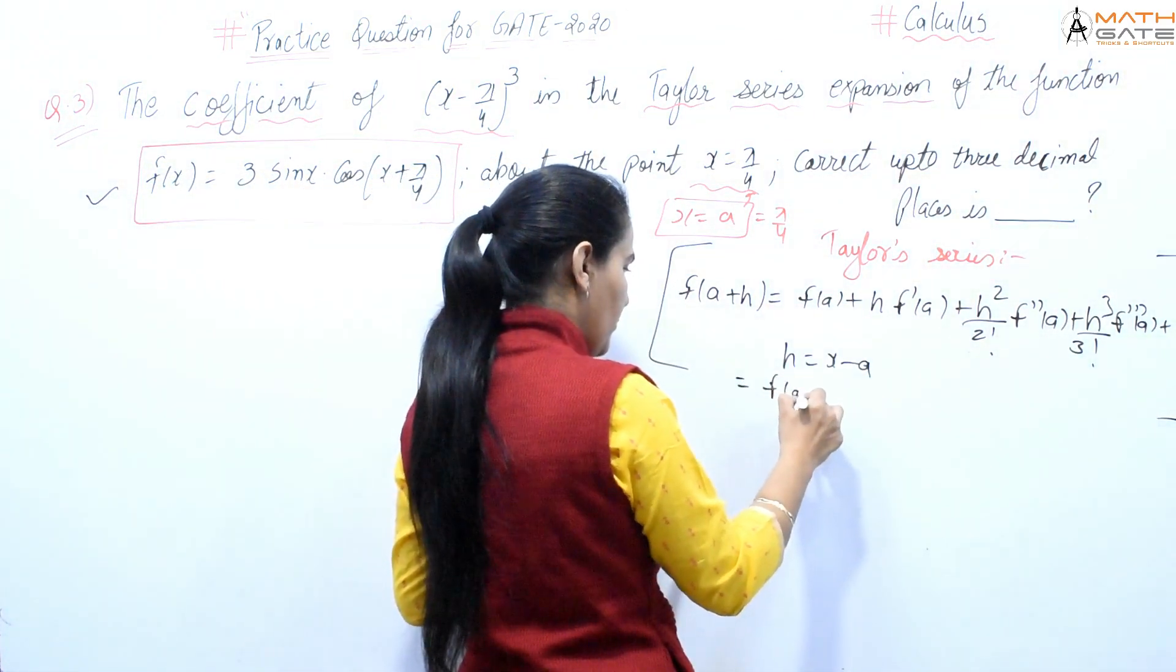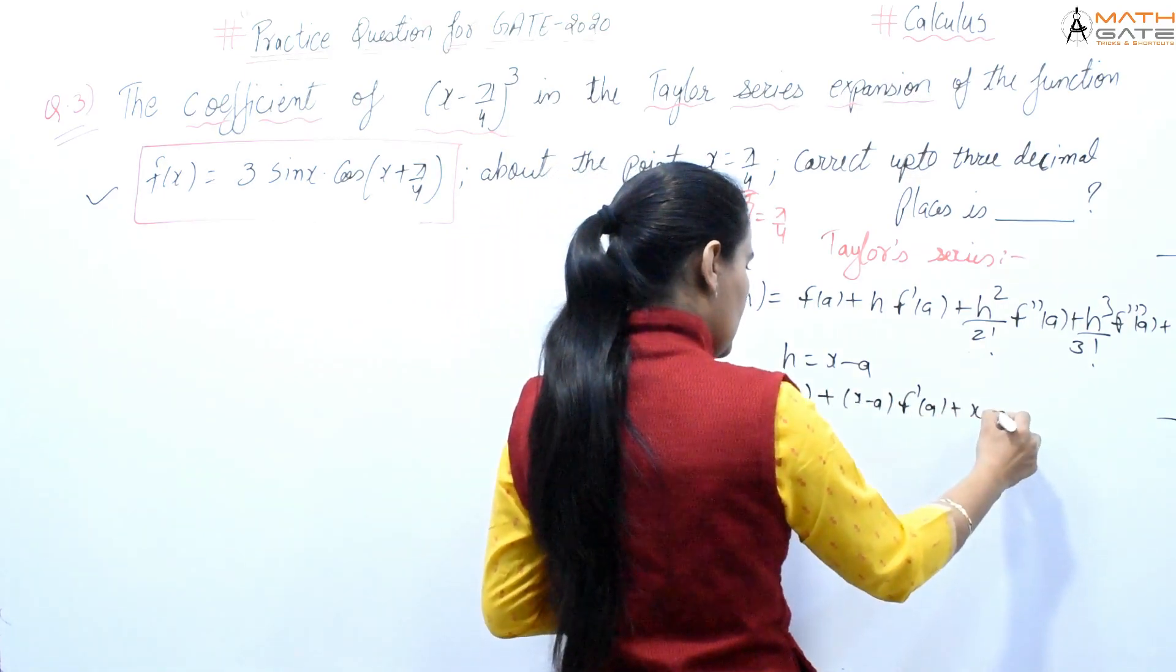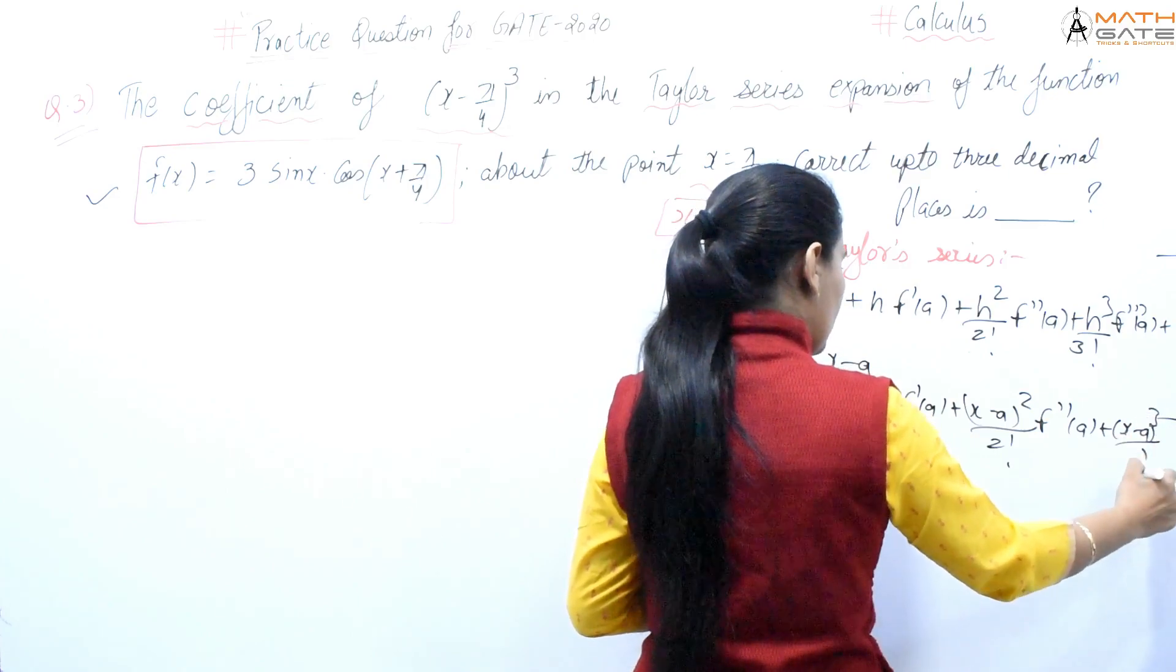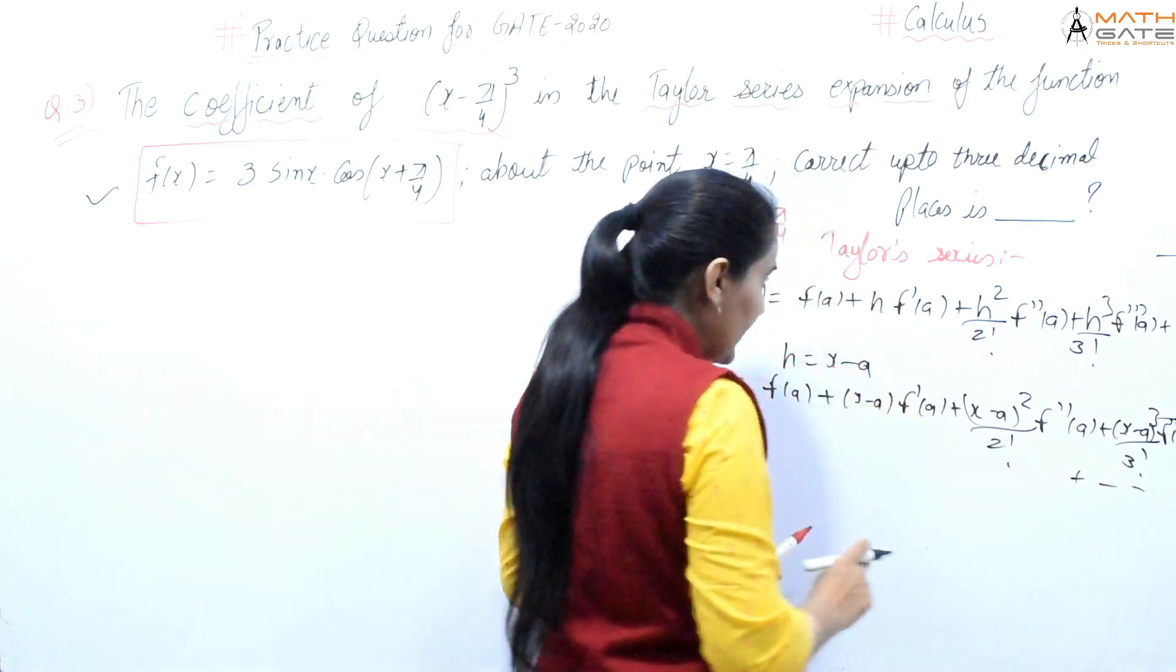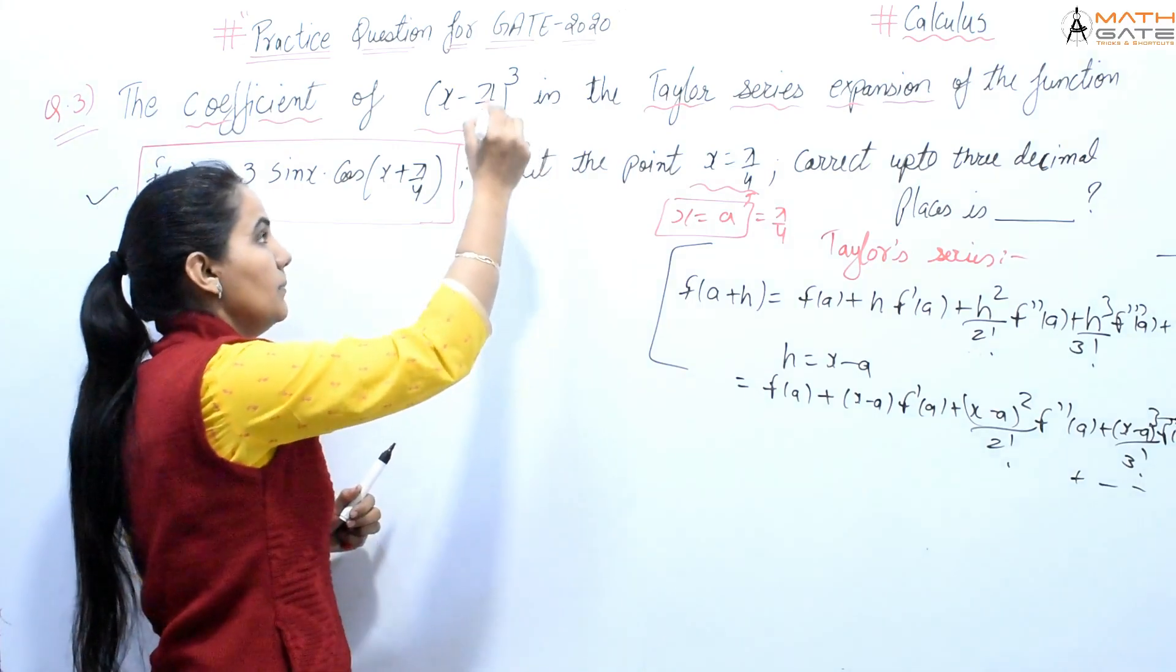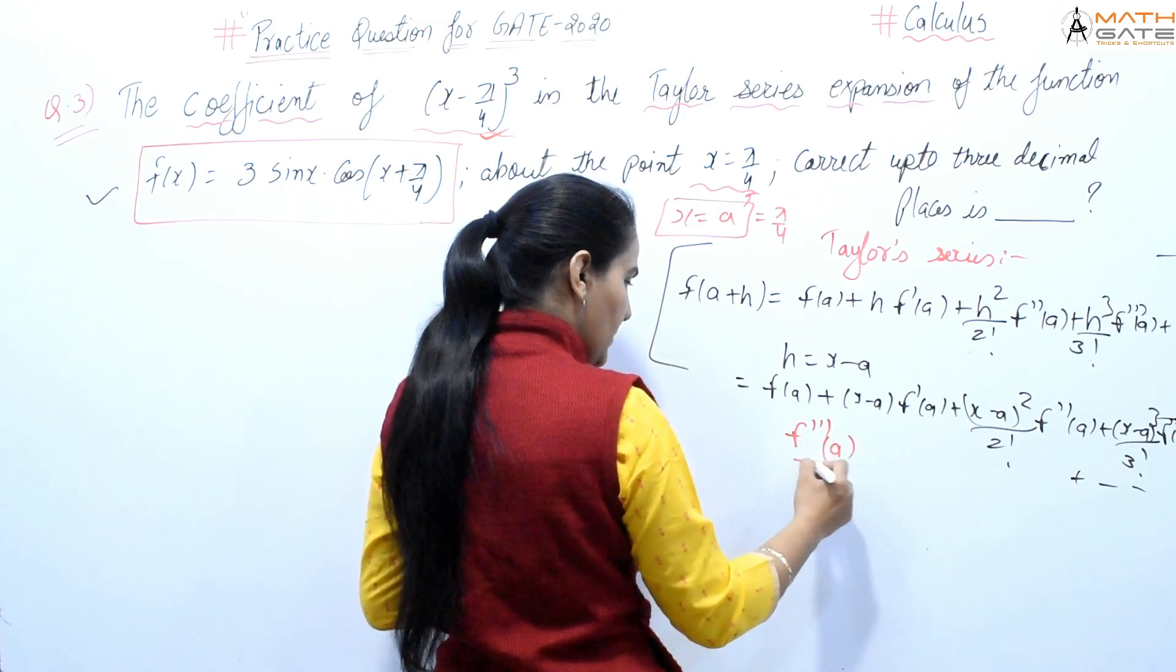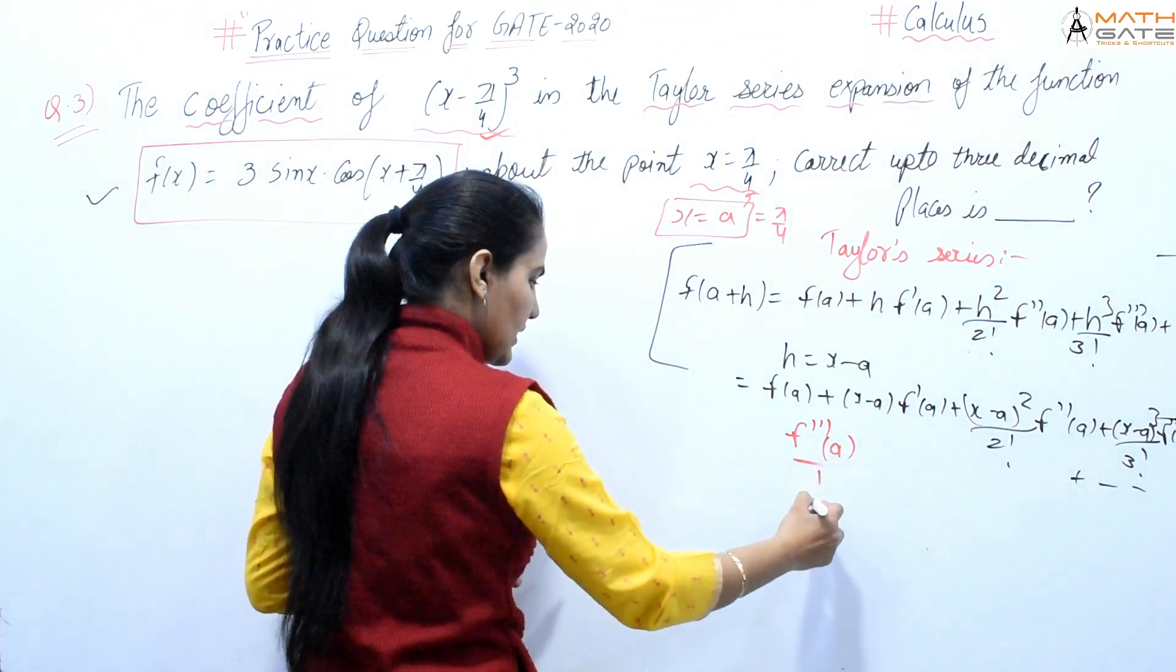We can also write this as f(a) + (x-a)f'(a) + ((x-a)²/2!)f''(a) + ((x-a)³/3!)f'''(a) and so on. This makes it clear that the coefficient of (x - π/4)³ will be f'''(a) divided by 3!.